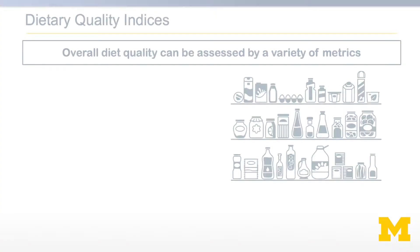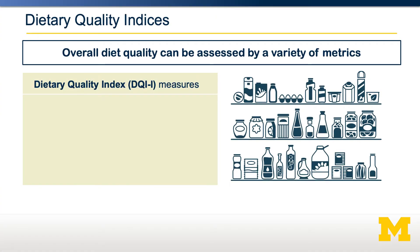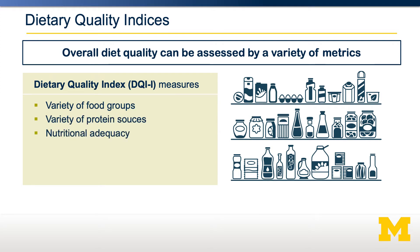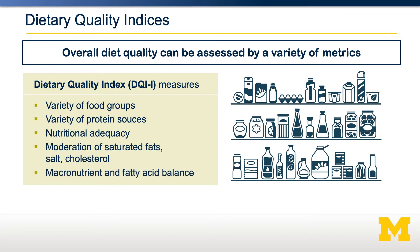There's a variety of different indices by which we can assess diet quality. One of these is called the DQI, or the Diet Quality Index. In this case, there are five different dimensions: the variety of different foods somebody eats, the variety of different protein sources, whether the diet is nutritionally adequate and meeting the DRIs for macronutrients and micronutrients, whether there is a moderate intake of saturated fat, salt, and cholesterol, and whether there is a balance between macronutrients and fatty acids. This can be used to broadly assess a population's diet quality.